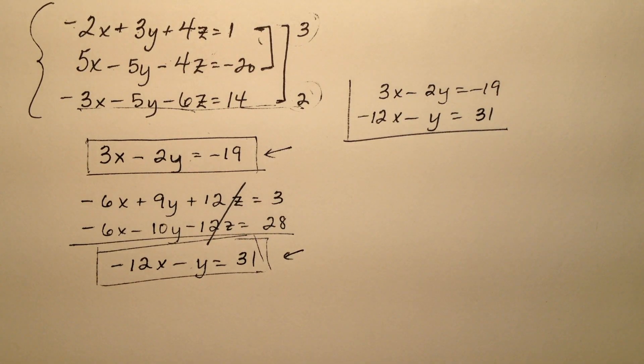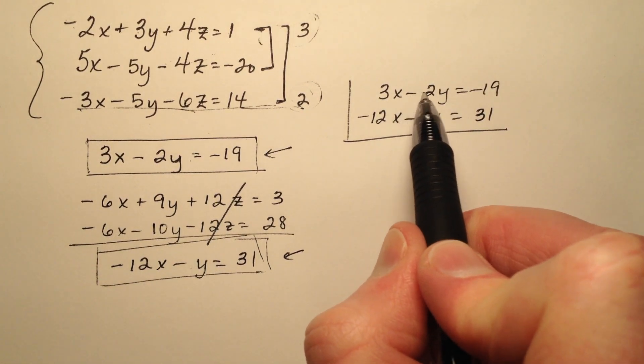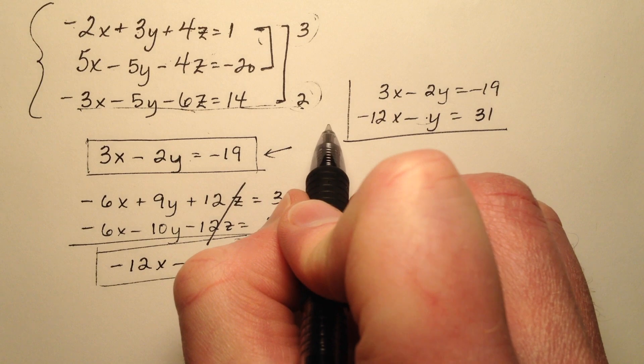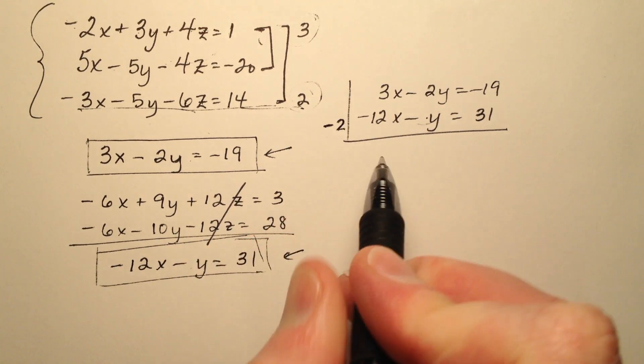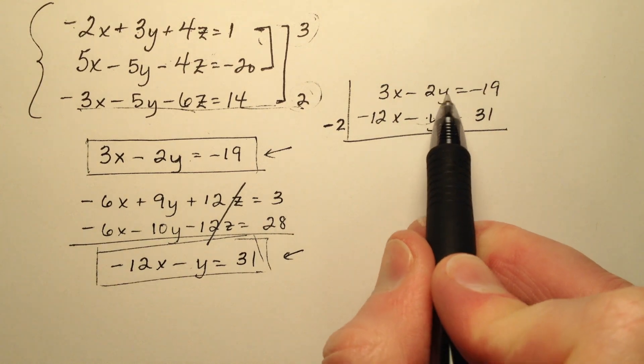3x minus 2y equals negative 19 and then I have this negative 12x minus y equals 31. So I'm going to go ahead and use elimination on this. So it looks like my y's might be a great candidate. I have a negative 2 up here and a negative 1. So if I were to multiply the bottom one by negative 2 I would have a negative 2y and a positive 2y and those would cancel.